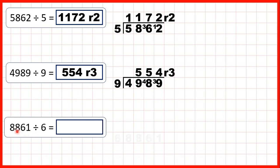Finally, we have 8,861 divided by 6. If we look at the first digit, 8 divided by 6 is 1 remainder 2, because 1 times 6 is 6, and then we need 2 more to get to 8.